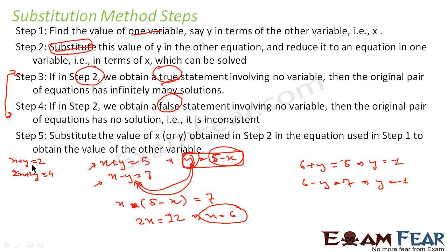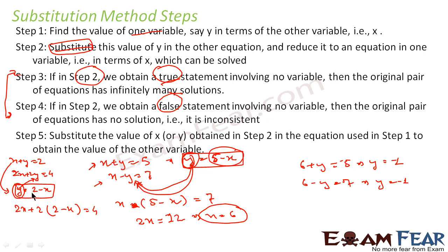From x plus y equals 2, I write y in terms of x: y equals 2 minus x. I then put this into the second equation: 2x plus 2(2 minus x) equals 4, which becomes 2x plus 4 minus 2x equals 4. The 2x terms cancel, leaving 4 equals 4, which is a true statement — meaning this system has infinite solutions.